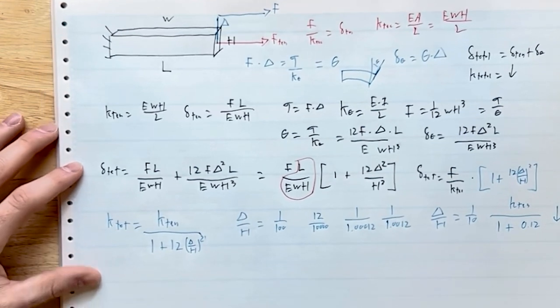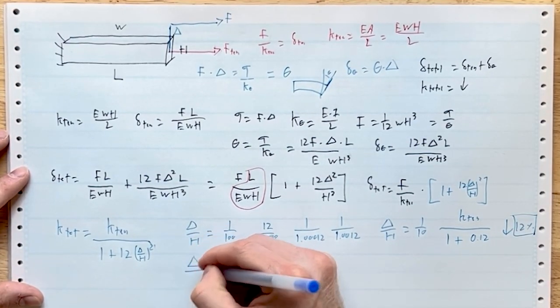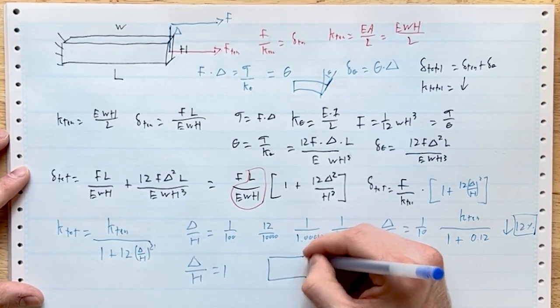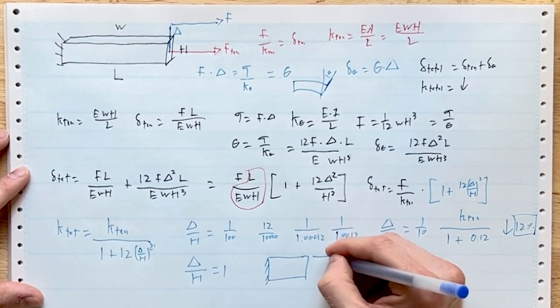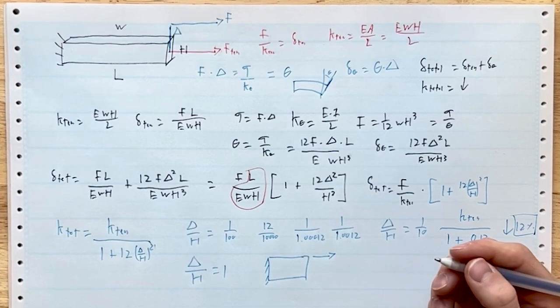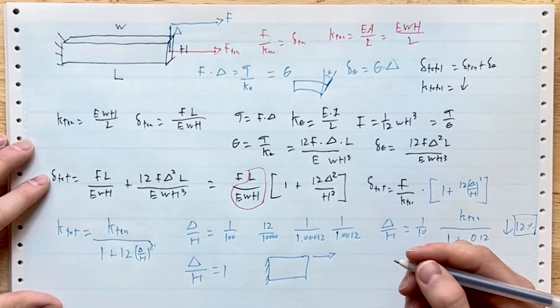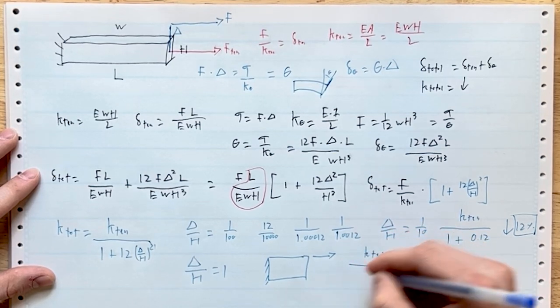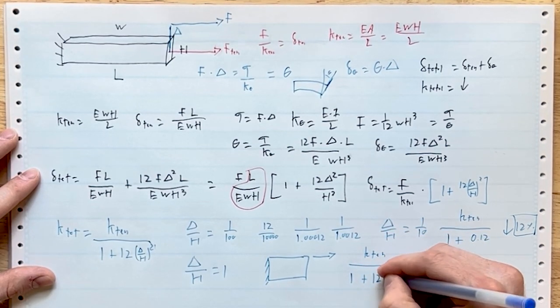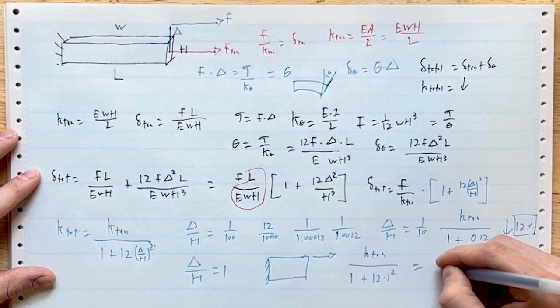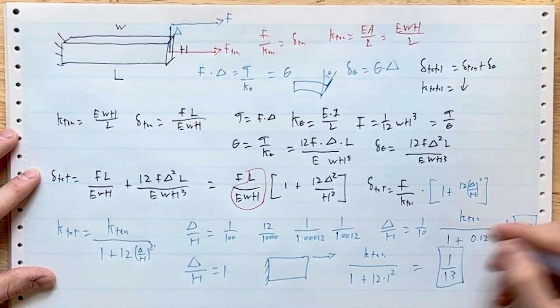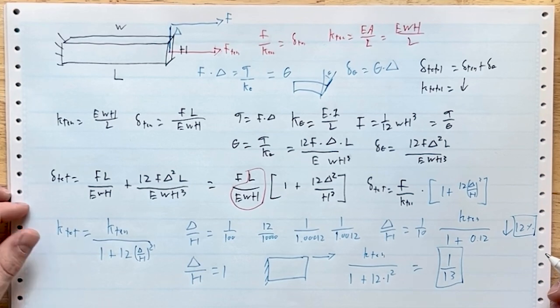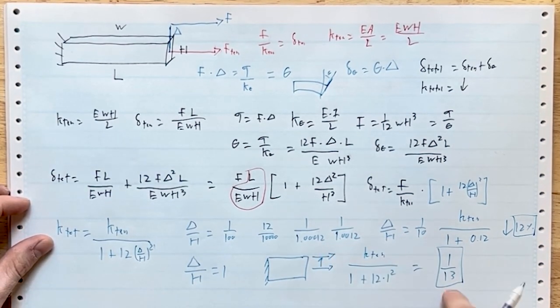Now let's go crazy: delta over h equals 1. That is pure eccentricity—you have your fixed beam and you're actually loading it on the edge. You might think, oh, this is not a big deal, but actually it is going to be catastrophic because that term at the bottom is now k_tension divided by 1 plus 12 times 1 squared, which equals 1/13th of your original stiffness. So if you're not careful and you move your force application point from the center to the edge, your stiffness drops by a factor of 13. That will ruin your day. This is precision stuff.